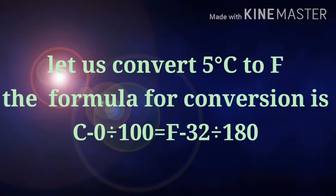Now let us see how to convert degree Celsius to Fahrenheit. Let us take an example: 5 degree Celsius. In order to convert 5 degree Celsius to Fahrenheit, we need to use a formula. This is the general formula to convert Fahrenheit to degree Celsius or degree Celsius to Fahrenheit. The formula is C minus 0 divided by 100 which is equal to F minus 32 divided by 180. Here C represents degree Celsius values, F represents Fahrenheit values.